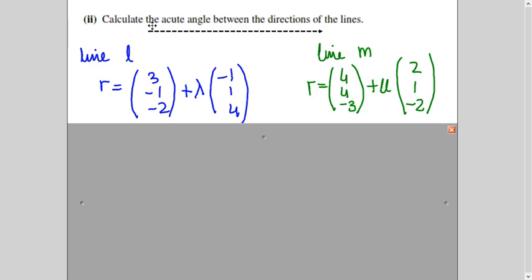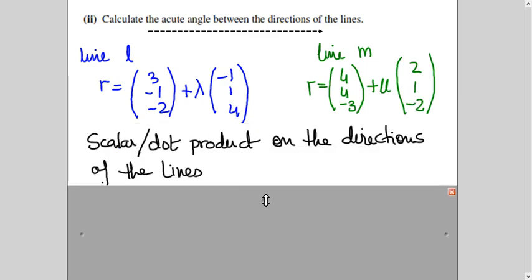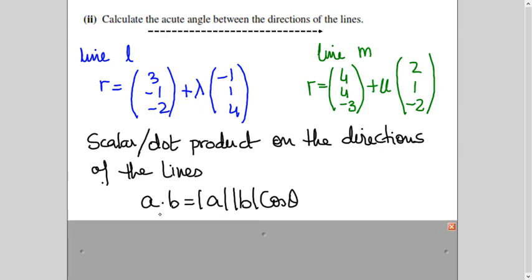Next part of the question is saying find the acute angle between the direction of the lines. Now remember acute angle. So the lines are here. When we are finding out the angle, we apply dot product or scalar product between the directions. Now these are the directions of the line: minus 1, 1, 4, and 2, 1, minus 2. So I will apply dot product on this.